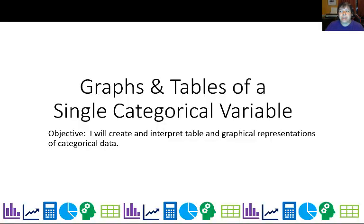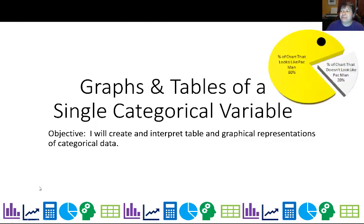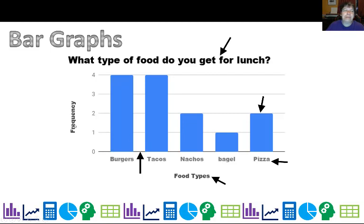In today's lesson we're going to look at categorical variables and how to display them. Right now let's focus on graphs and tables for just a single categorical variable. Here's one of my favorite graphs - it's a pie chart. See, percent of the chart that looks like pac-man, percent of the chart that doesn't look like pac-man. I like to start my lessons with something humorous.